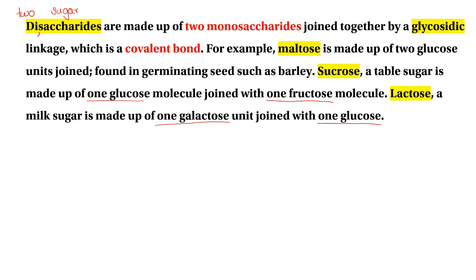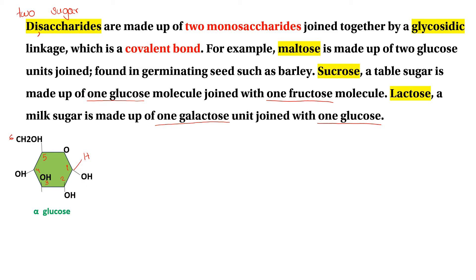Now we have to add more sugar to the lactose. If you want to add glucose to the lactose, you can add glucose. You can add the glycosidic linkages. The glycosidic linkage is the one that links to the lactose — you can add 2, 3, 4, and 5.